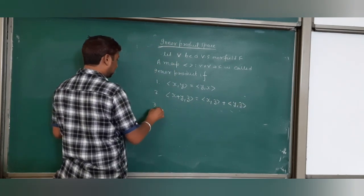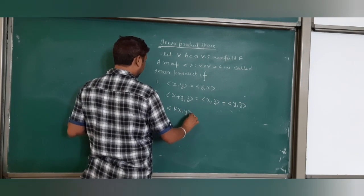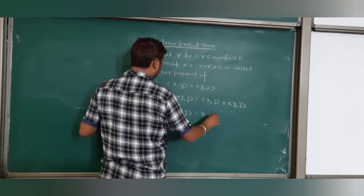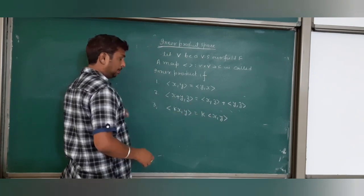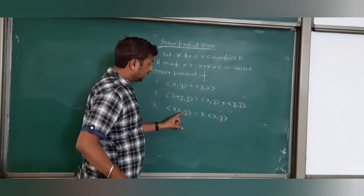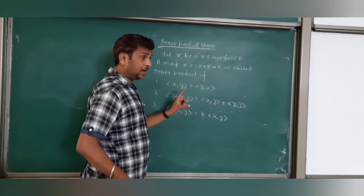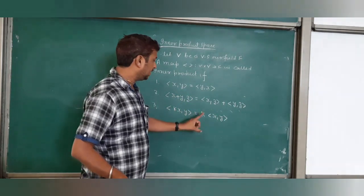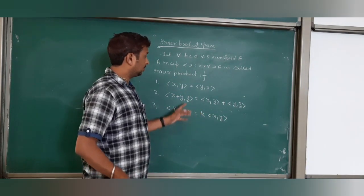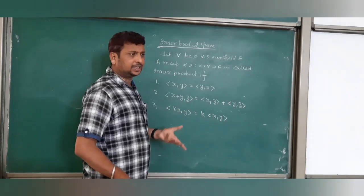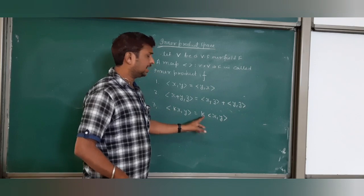Third, inner product of kX, Y is equal to k times inner product of X, Y. Here, you remember one point: if k is in second argument and field is complex numbers, then k bar will come when you take it out. But if the field is real, then it doesn't matter, everywhere when you take outside it's k.